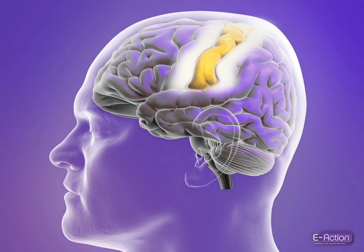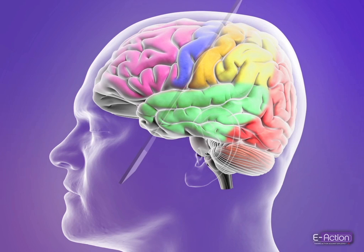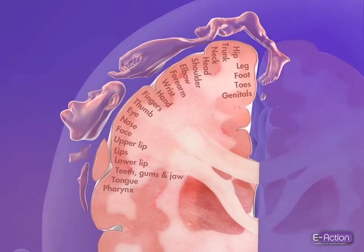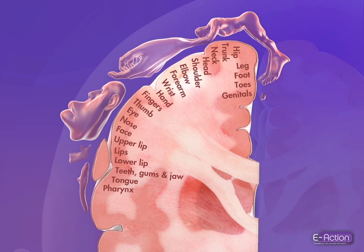The sensory cortex also has specific regions that direct sensations of all parts of the body. If a focal seizure occurs in this part of the brain, it will affect sensations to a specific part of the body. A cut section through the motor and sensory cortices demonstrates how much of the brain surface controls each region of the body. The body part affected by the focal seizure depends on the location of the neurons involved.